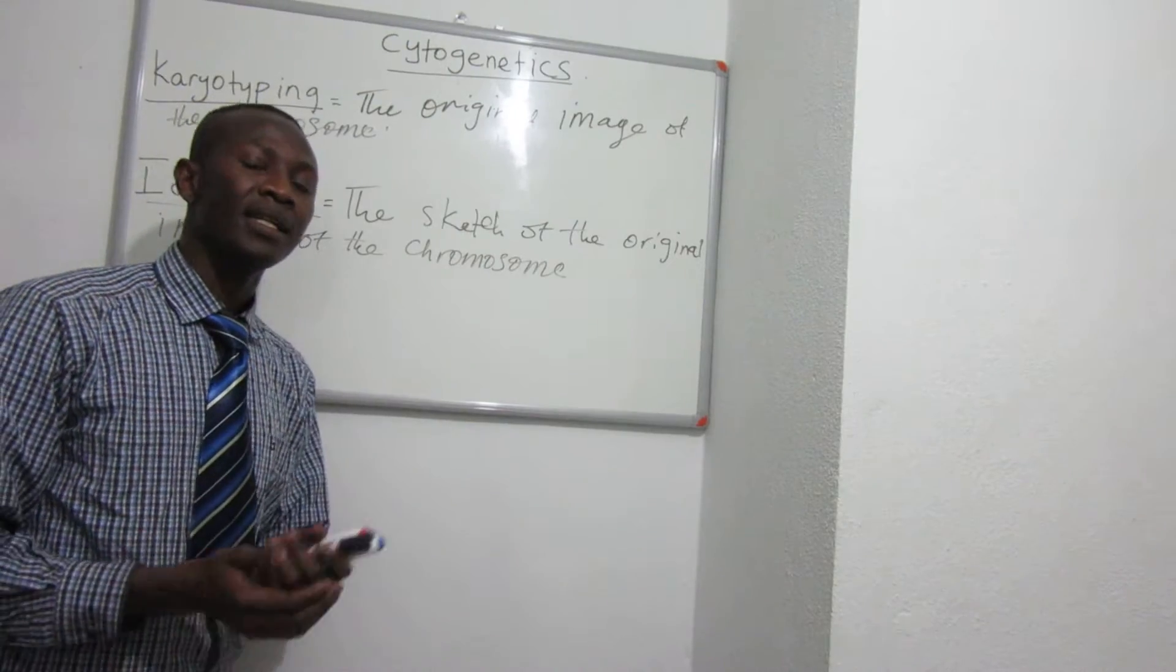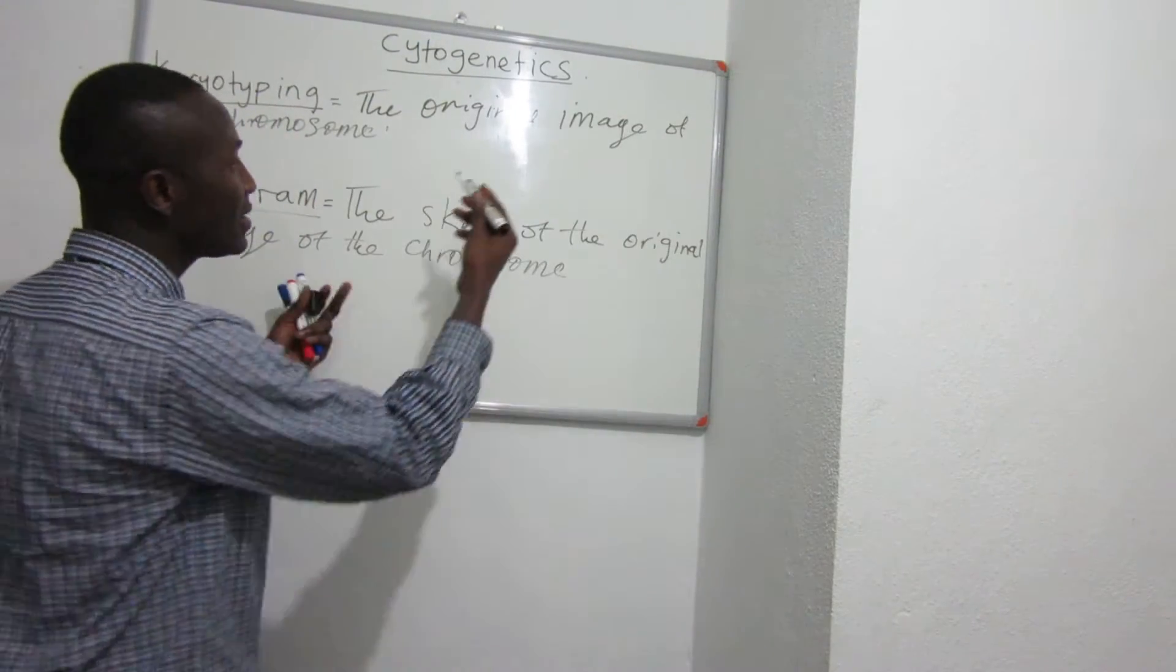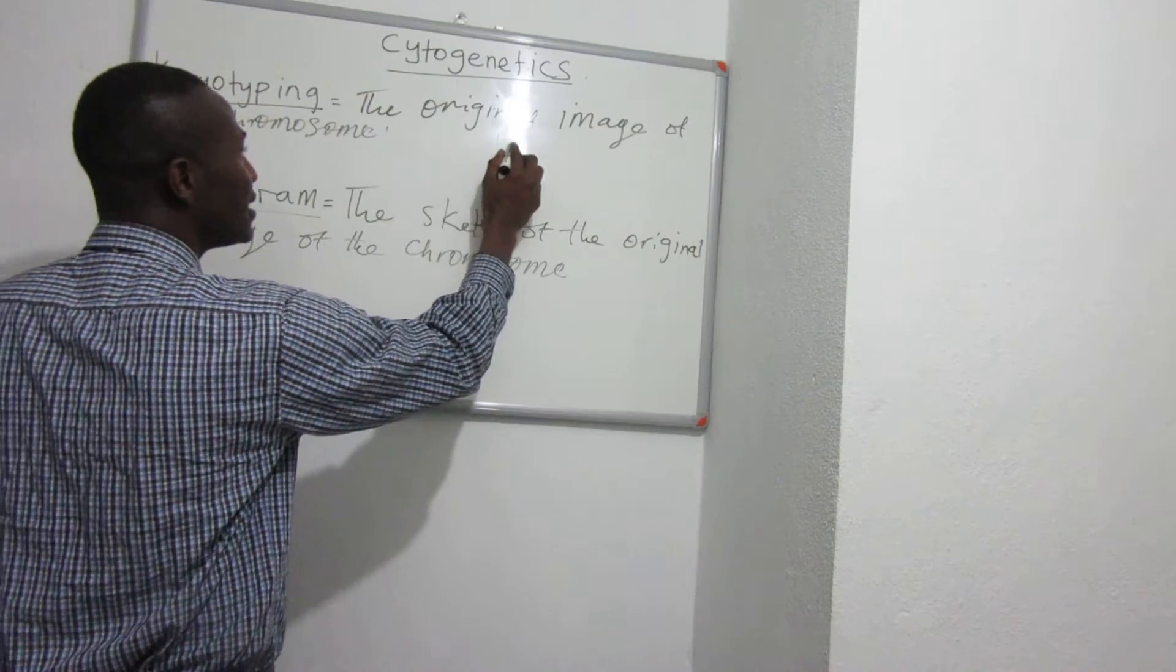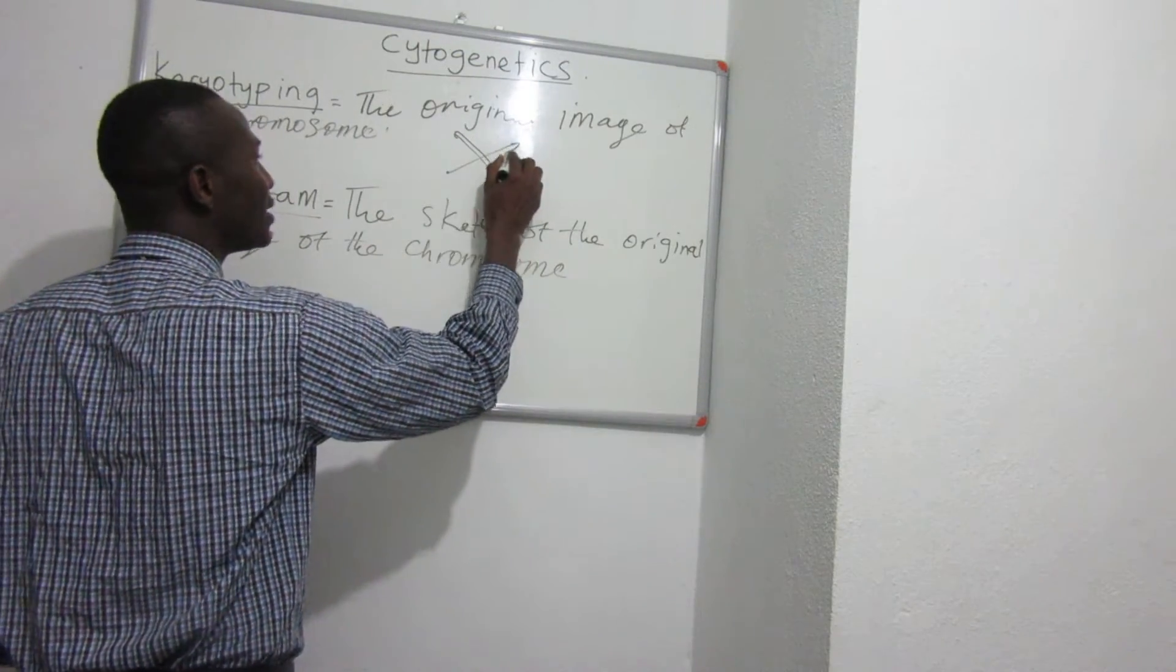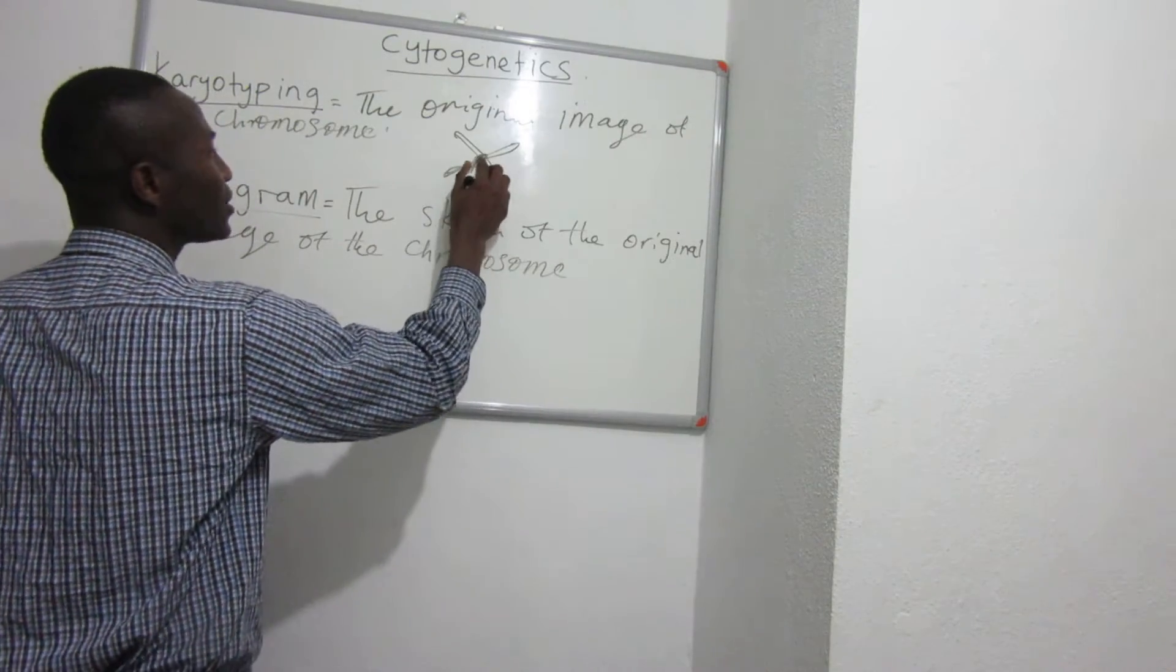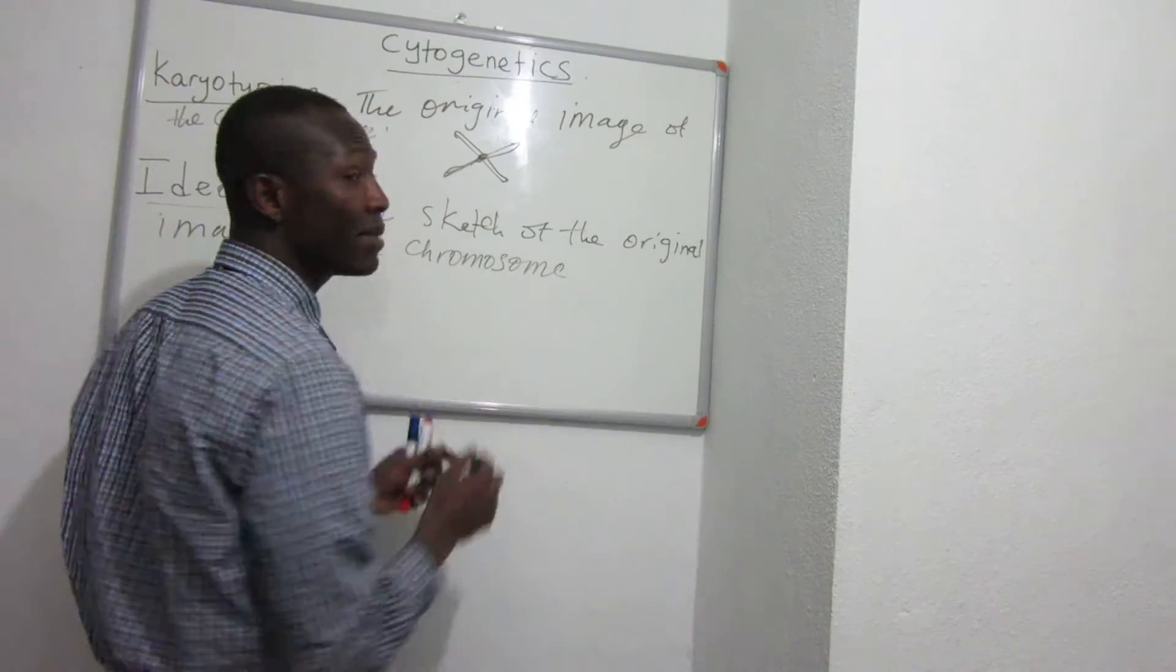Ideogram and karyotyping. To make it easy, let's say under the microscope, this is the chromosome that you have. This is the chromosomal pair that you have. This is what you see under the microscope.